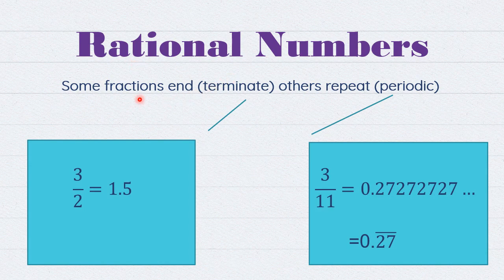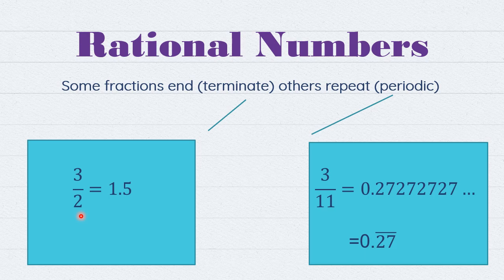Rational numbers can terminate or they can be repeated. Any number that can be written as a fraction is rational — whether it ends, like 1.5, which is 3 over 2, or whether it repeats, like 3 over 11, which is 0.272727... The repeating part is 27, so we call this a periodic number. In both cases they are rational because we can write them as a fraction.